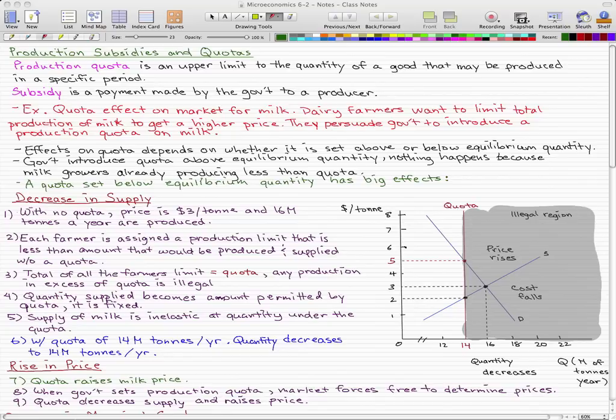A production quota is an upper limit to the quantity of a good that may be produced in a specified period, and a subsidy is a payment made by the government to a producer.